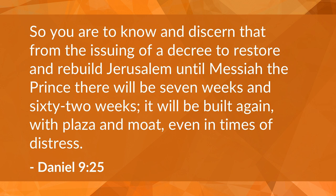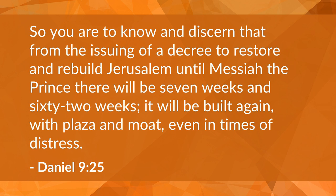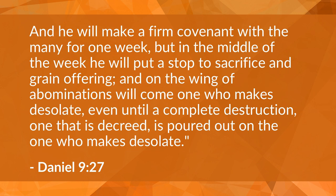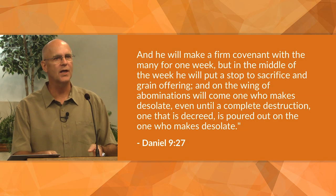The angel continues: 'You are to know and discern that from the issuing of a decree to restore and rebuild Jerusalem until Messiah the Prince there will be seven weeks and 62 weeks. Then after the 62 weeks the Messiah will be cut off and have nothing, and the people of the Prince who is to come will destroy the city and the sanctuary. And He will make a firm covenant with the many for one week, but in the middle of the week He will put a stop to sacrifice and grain offering, and on the wing of abominations will come one who makes desolate.'